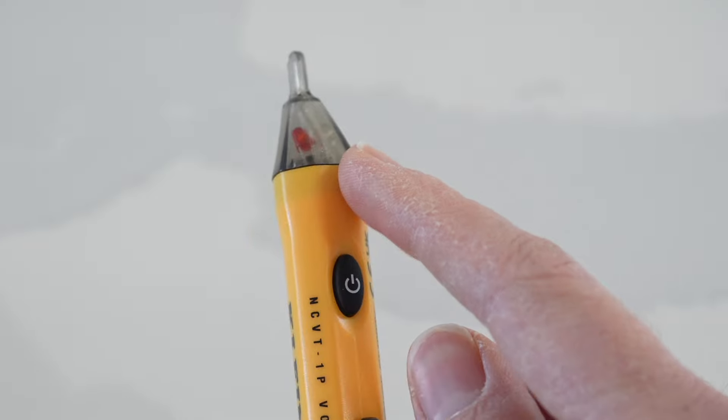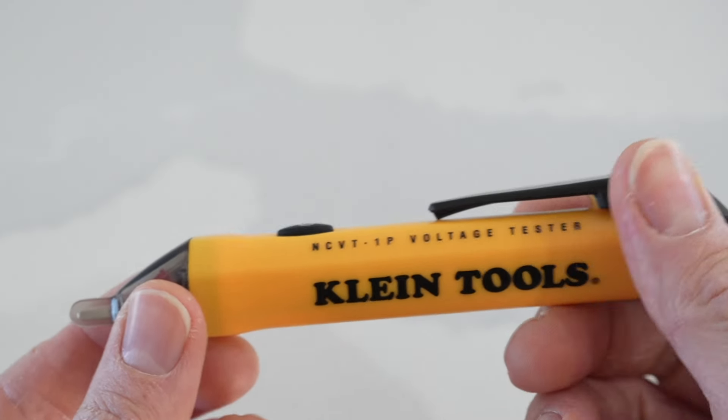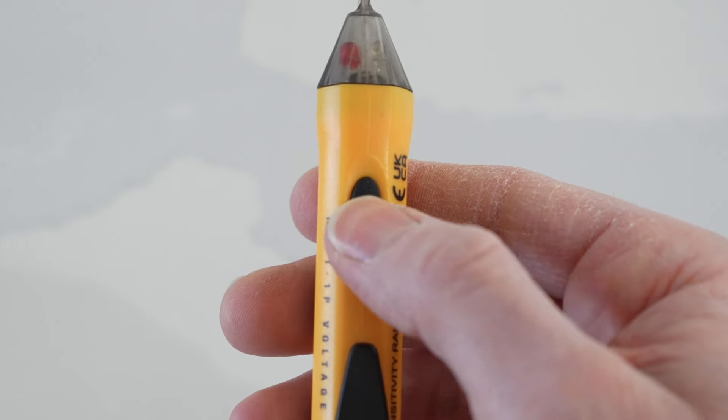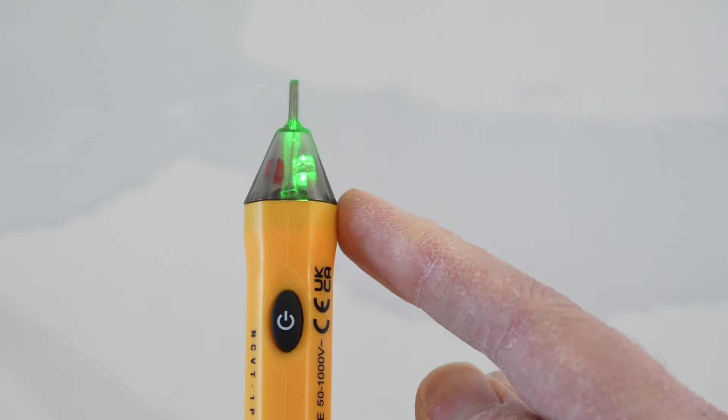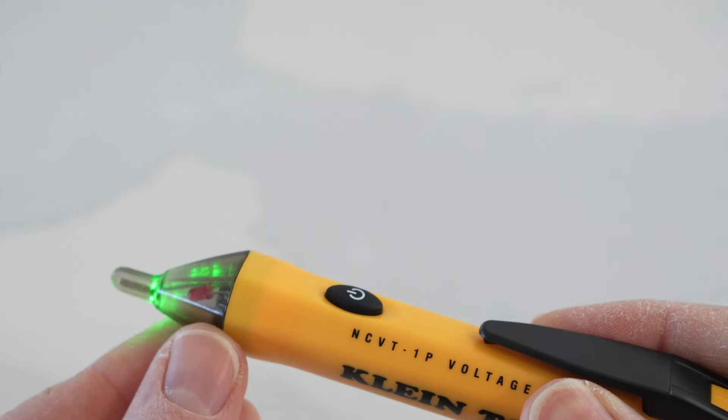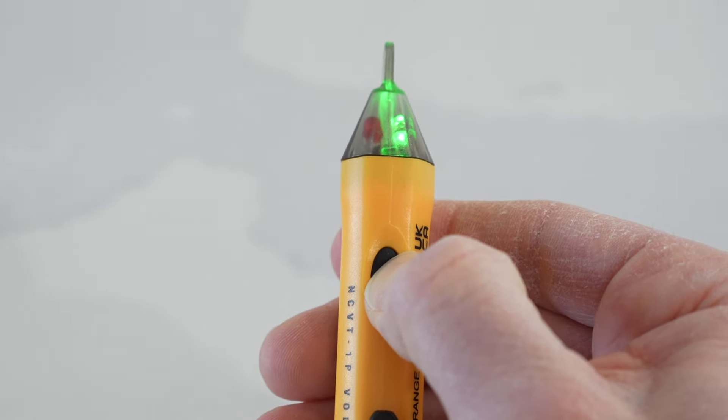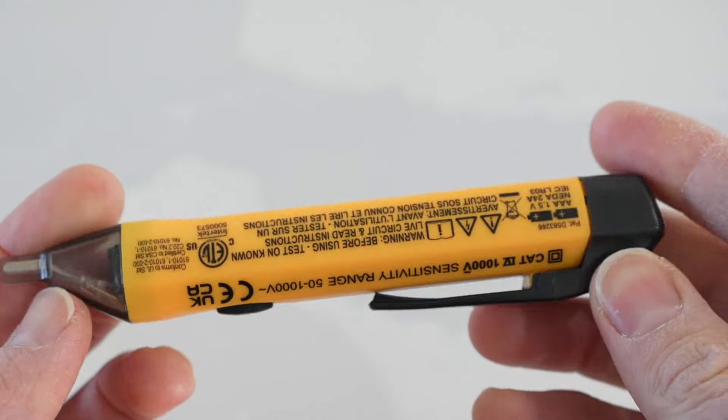Now if you don't want to hear that noise when you power it on and off, and it also makes that same noise when you're using it, you hold this power button down for a second or two. And when it turns on, it did not make any noise. And when you go to use it, it also will not make any noise. So if you want to use it silently, that's how you do it.